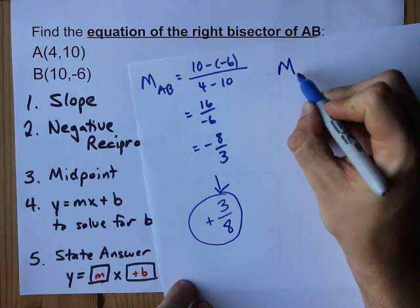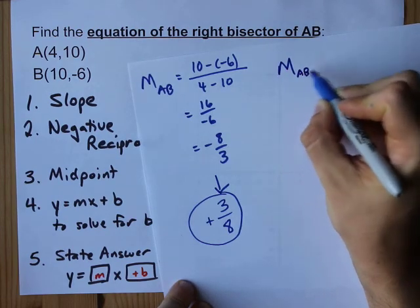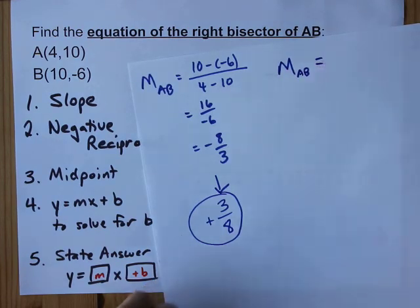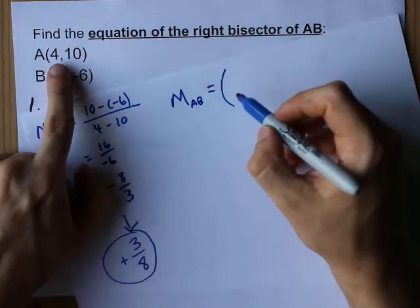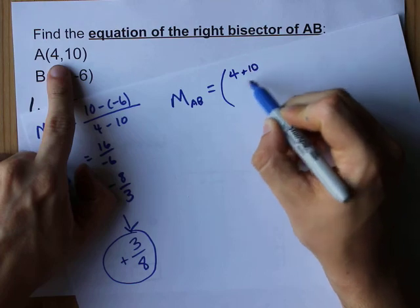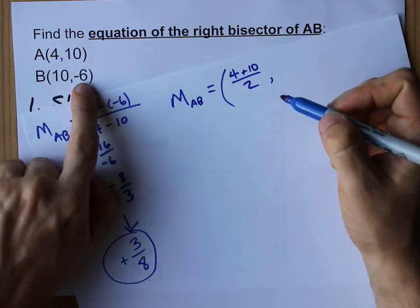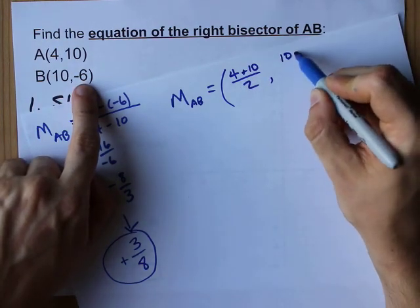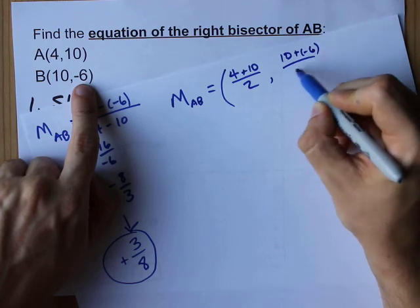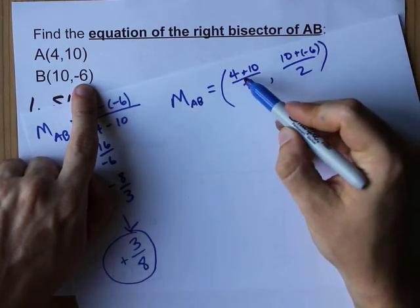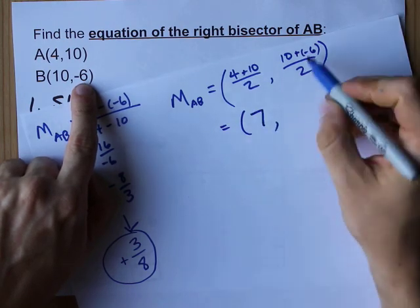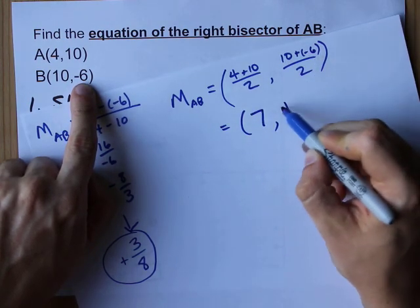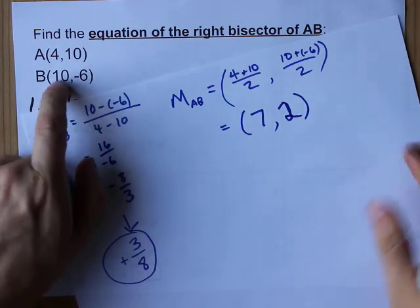Step three is to find the midpoint of AB. This is a capital M for midpoint. The formula for that is the average of the x values, 4 and 10, and the average of the y values, 10 and negative 6. When you take the average, you add them and divide by 2. 14 over 2, 4 over 2, 7, 2.